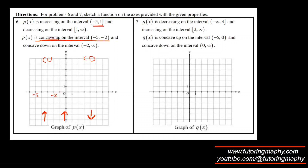For the graph: increasing and concave up looks like an upward cup going up. Then switching to increasing but concave down — an upward curve bending downward. Then decreasing and concave down — it flattens and turns downward, going all the way to positive infinity. On the left side, negative 5 is not included, so I'll draw an open circle there.